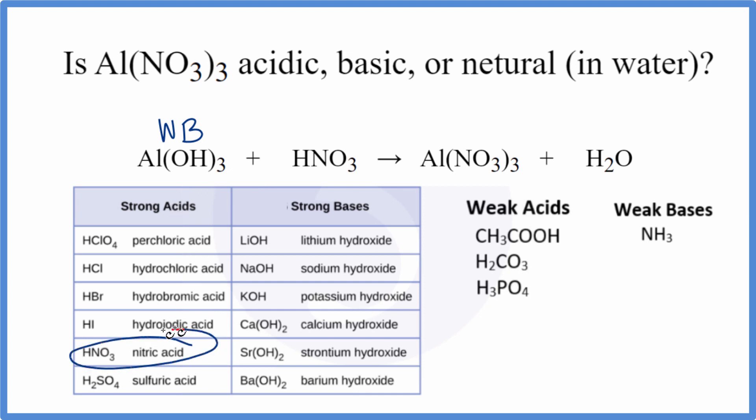HNO3 is a strong acid, so we write SA for strong acid. So we know the strengths of the reactants.